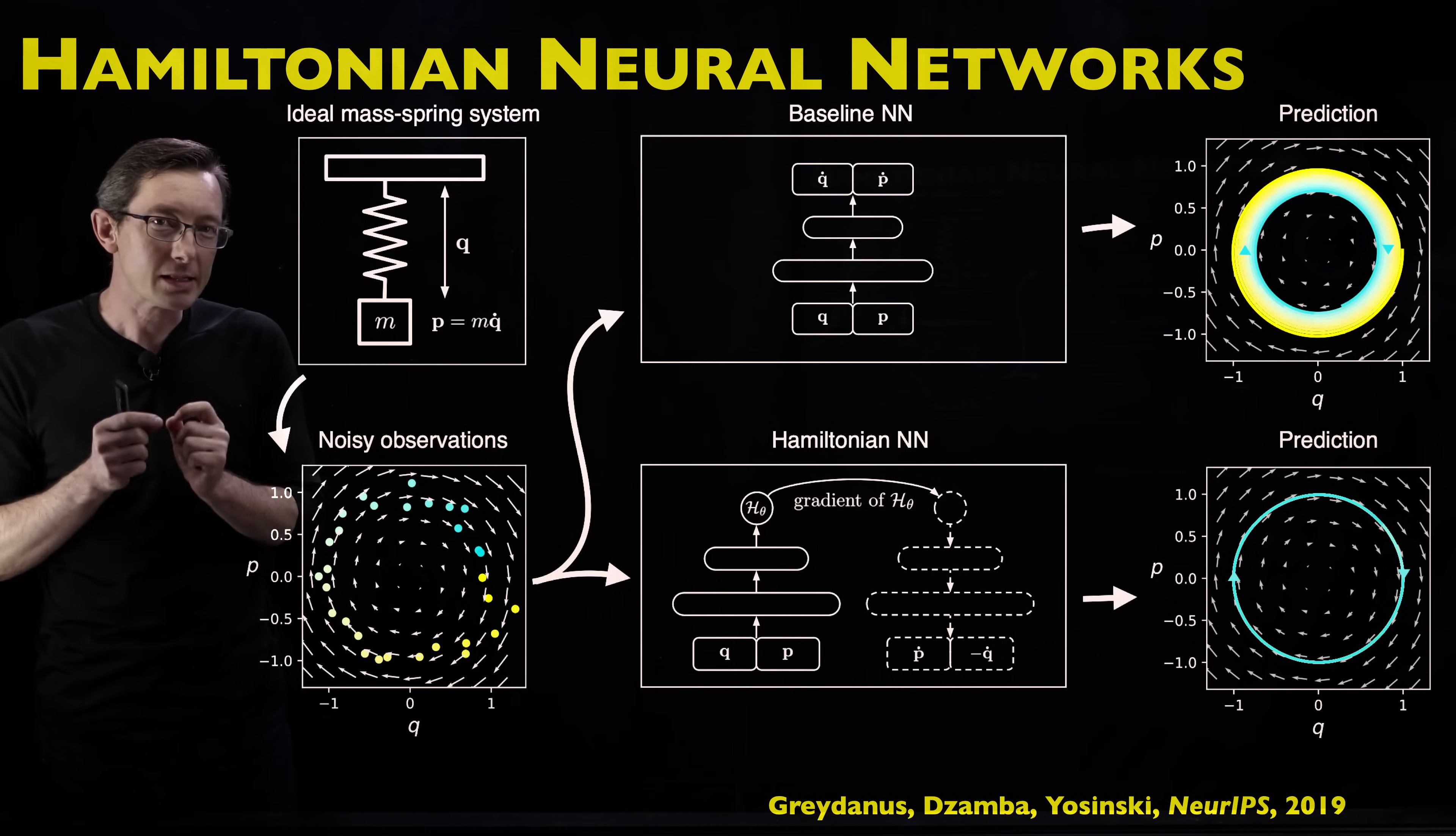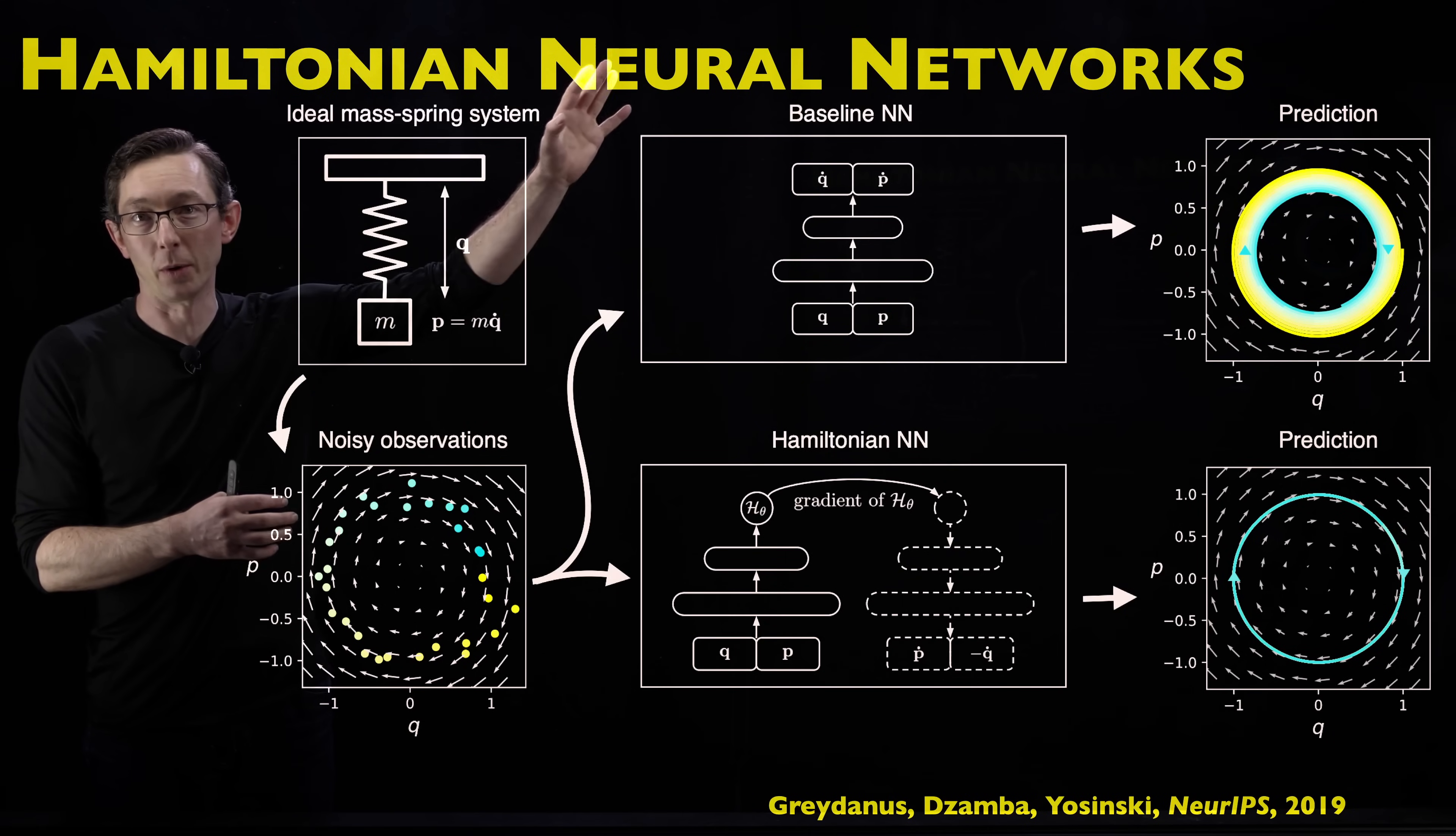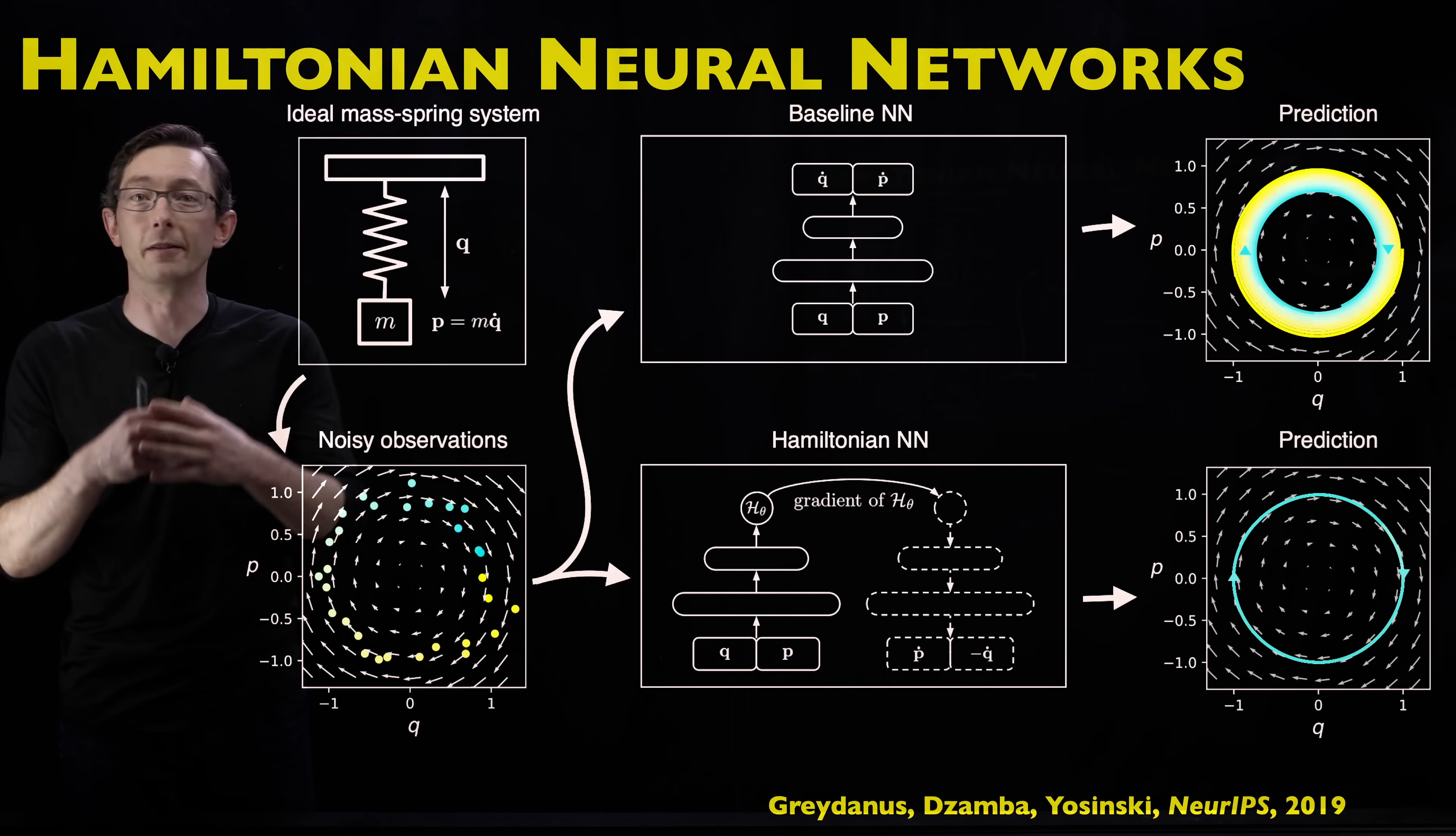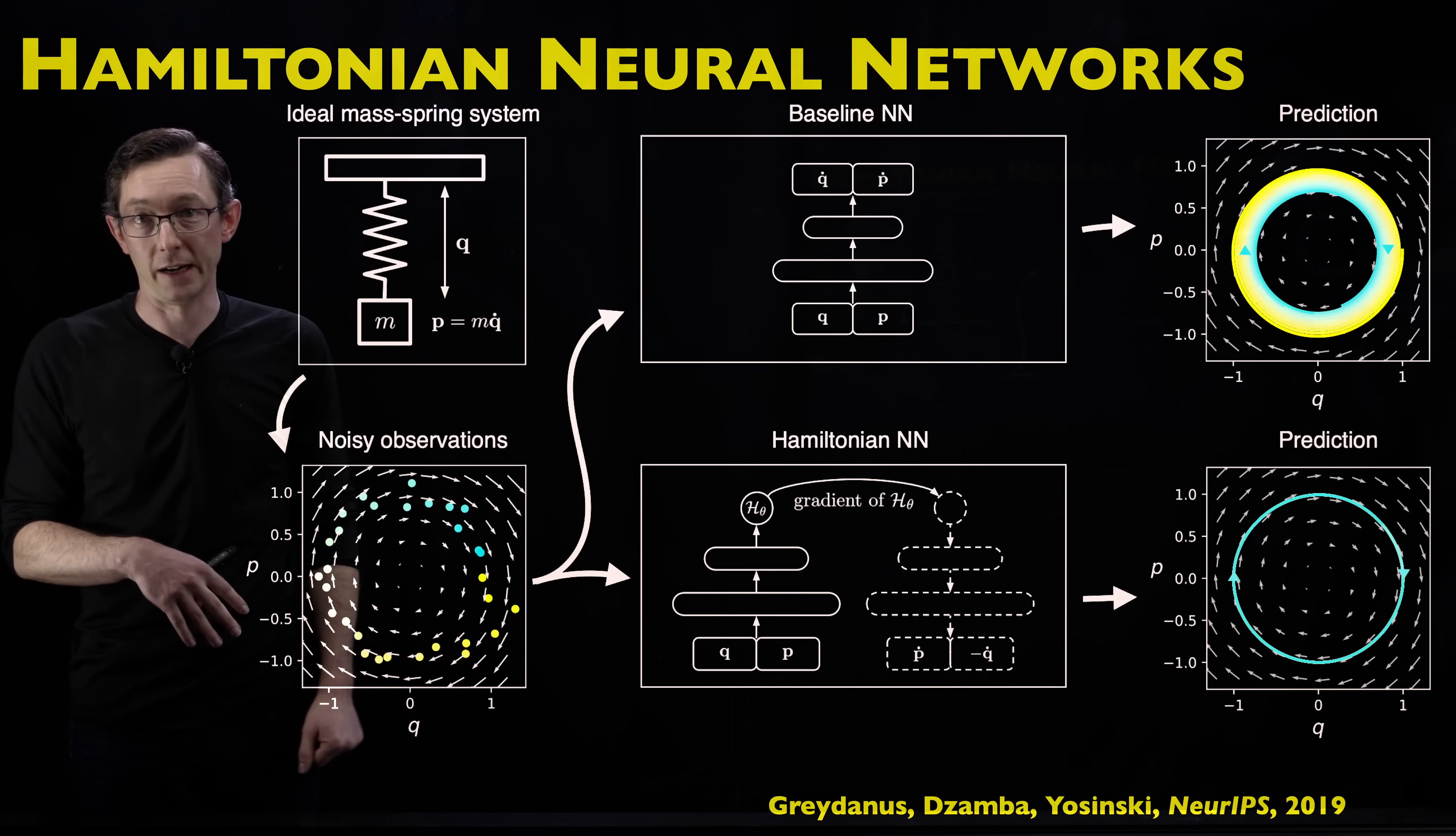Welcome back. So in this lecture we're going to talk about a custom neural network architecture called a Hamiltonian neural network that essentially leverages the Hamiltonian structure of many dynamical systems to do better dynamical systems learning from noisy observational data.